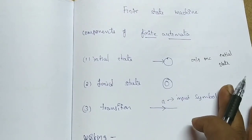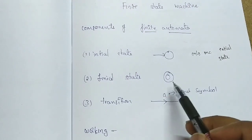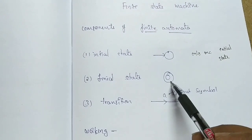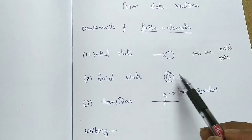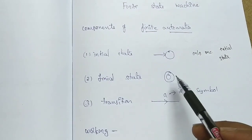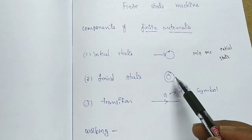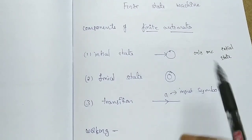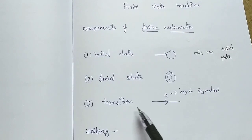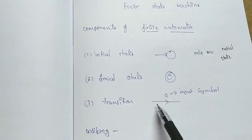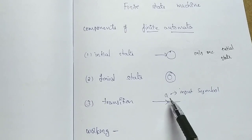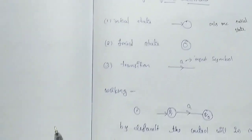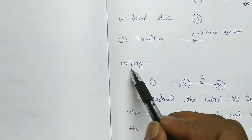The second kind is final states. States drawn with a double line are called final states. These states have a different perspective which we will cover shortly. The other kind is transitions. Transitions show the direction of the transition and the input symbol.